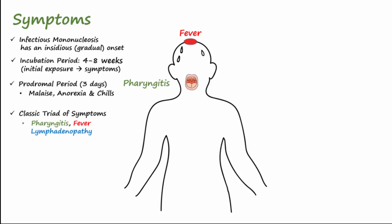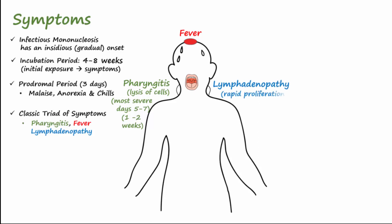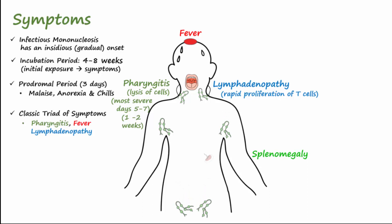Pharyngitis occurs due to lysis of virus-infected epithelial cells and B cells in the oropharynx, and is usually most severe on days five through seven of symptoms and persists for one to two weeks. Lymphadenopathy is caused by rapid proliferation of T cells mounting an immune response against the virus. The cervical nodes are the most involved because they drain the pharynx and tonsils, but axillary and inguinal nodes may also be involved. Splenomegaly is often palpable, but is sometimes only detected by ultrasound.